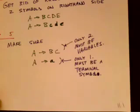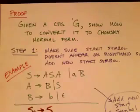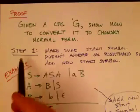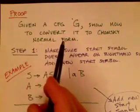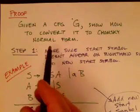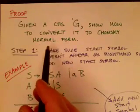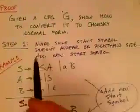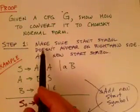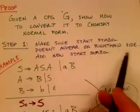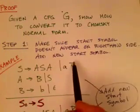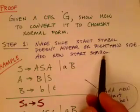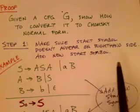This is a proof that for every context-free grammar there's an equivalent Chomsky normal form grammar, and our proof is essentially to show how to convert the grammar into Chomsky normal form. Step one in our algorithm is to make sure that the start symbol doesn't appear on the right-hand side of any rule, and we can always add a new start symbol to achieve this.